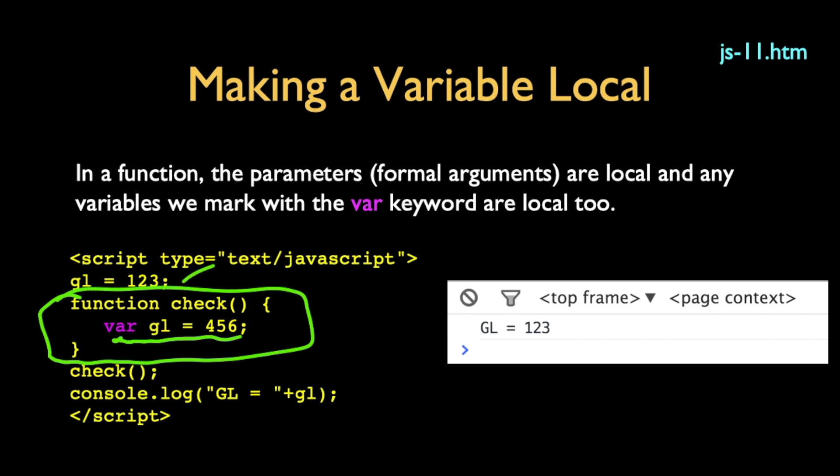So in this case, if we do gl equals 123, then we call function check and we look at gl, even though inside the function there's a gl that's 456, not the same gl. And so we get 123 when it's all said and done. So that's really quite nice.